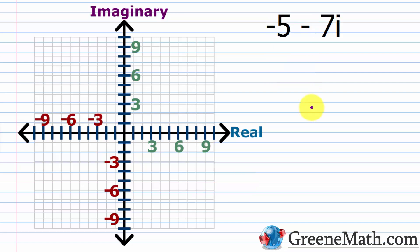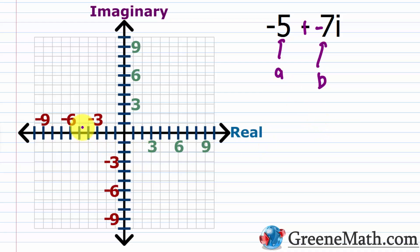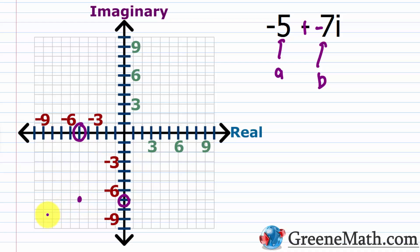For negative 5 minus 7i, matching to a plus bi, my a is negative 5 and my b is negative 7. On the real axis I go 5 units to the left, and on the imaginary axis I drop 7 units down. That gives me my point for negative 5 minus 7i.